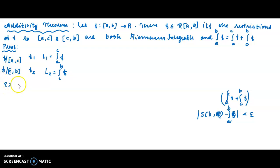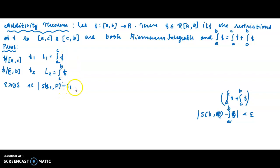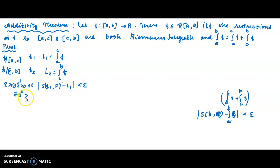Since f is Riemann integrable over [a, c], given any epsilon greater than 0 there exists delta-prime greater than 0, such that modulus of S(f1, P) minus L1 is less than epsilon. Our goal: given any epsilon greater than 0 there exists a corresponding delta, such that modulus of S(f2, P) minus L2 is less than epsilon, for all partitions with norm less than delta-double-dash.